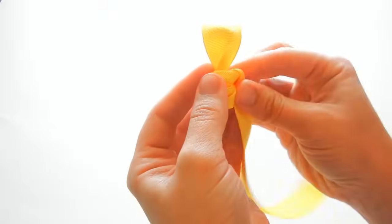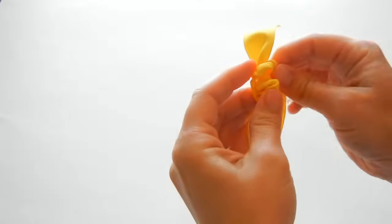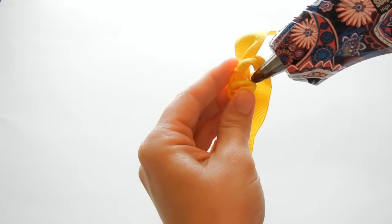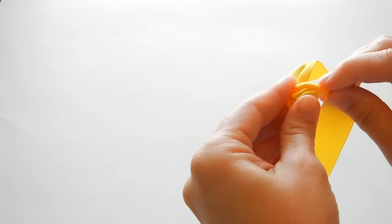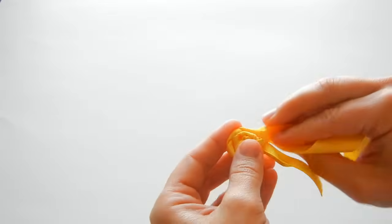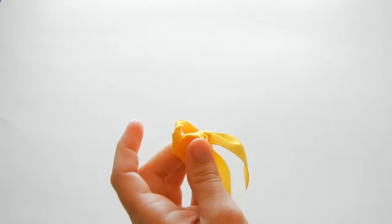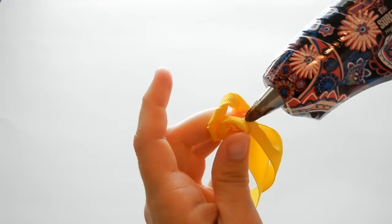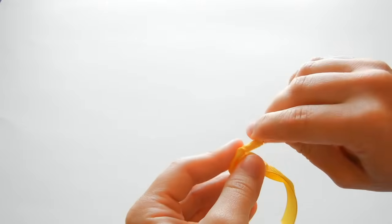Just keep twisting and adding more hot glue. You just keep going until you run out of ribbon or until you get to your desired size.